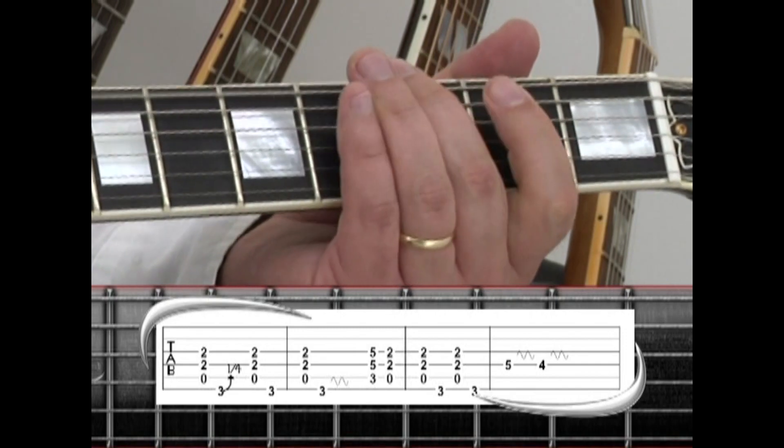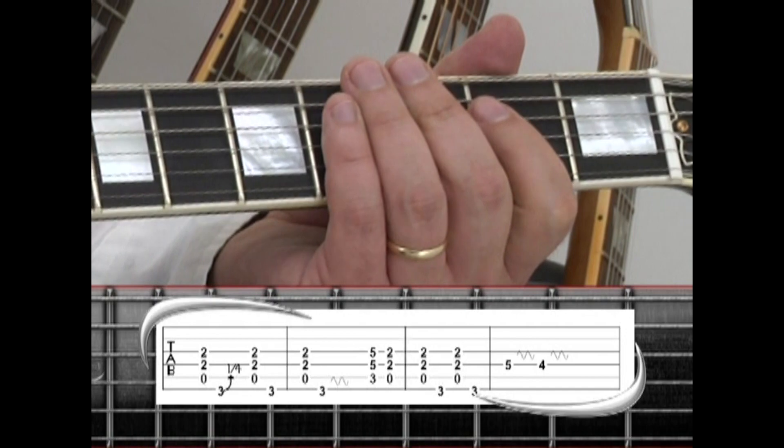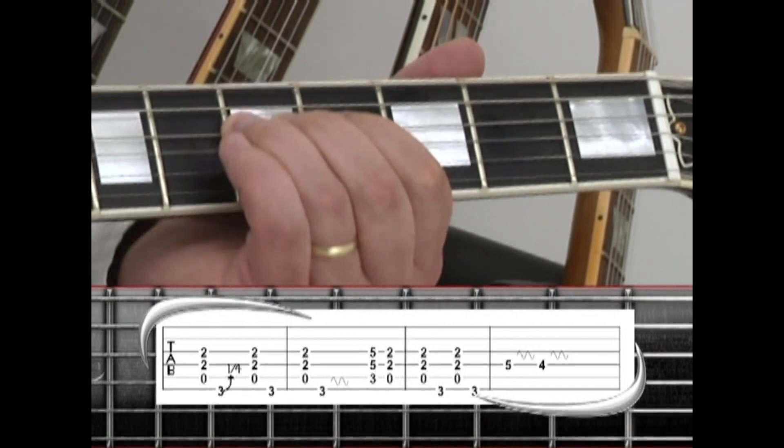A5 to G mute. A5 G note with a mute. 4th string 5th fret with vibrato. To the 4th fret with vibrato.